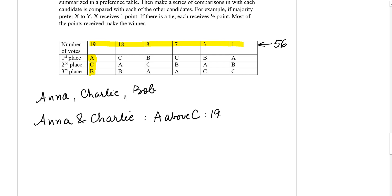In the second column, Charlie is above Anna, so we don't add it. In the third column, Anna is last, so we skip it. We are only looking for columns where Anna is above Charlie. She is above Charlie in one more column, adding 3 points, and again in another column, adding 1. So Anna's total is 23 points.